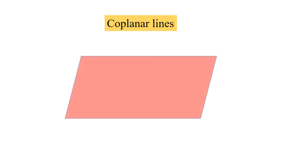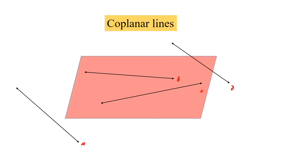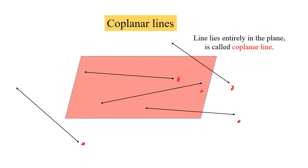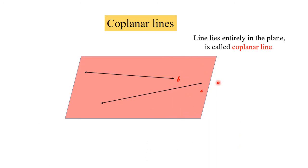Co-planar lines: if we have a plane with lines A, B, C, D, and E on it, co-planar lines are the lines which lie entirely in the plane. Lines B and C are lying entirely in the plane, so they are co-planar lines. But lines A, D, and E are not lying entirely in the plane, so we cannot call them co-planar lines. Therefore, only lines B and C are co-planar here.